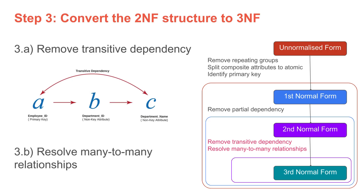Now we're ready to work out the third and final step: converting the database structure from second normal form to third normal form. The first action is to remove transitive dependencies — but this question does not have transitive dependencies. So we move on to the second action, which is to resolve many-to-many relationships.